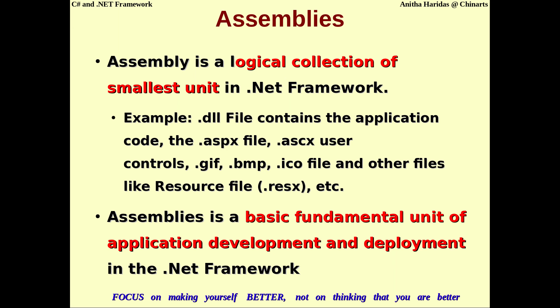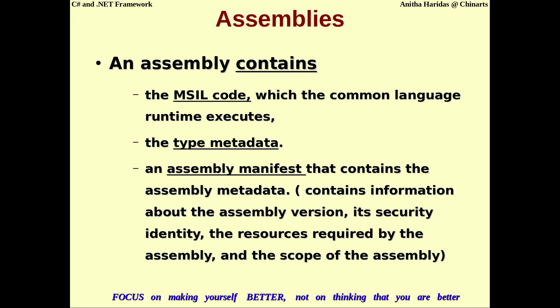In general, an assembly is a logical collection of the smallest units in the .NET framework — something like a .dll file that contains the application code, an .aspx file containing execution code, an .ascx file containing user controls, image files, or any other resources. All these things collected together are called an assembly. Assemblies are the basic fundamental unit of both application deployment and development.